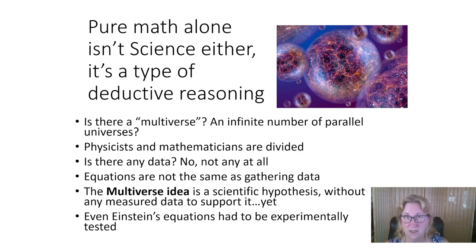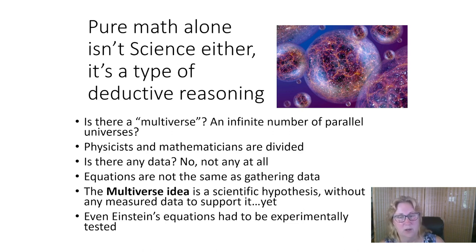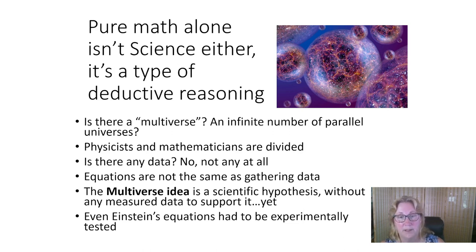One of the most famous examples of equations that were later proven are Einstein's equations. Einstein did no experiments — everything was in his head. But after he published his equations, people immediately started testing them, and so far all of Einstein's equations have survived testing and data collection. So even Einstein had to be tested experimentally. Math alone is not data.